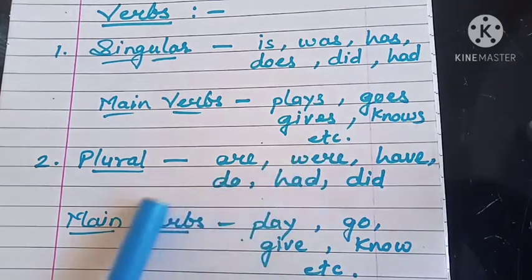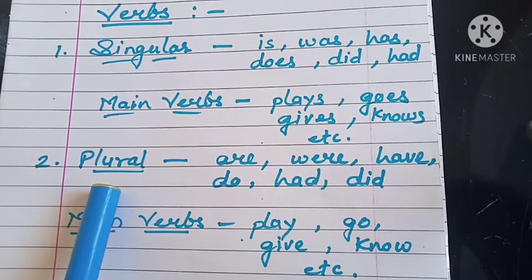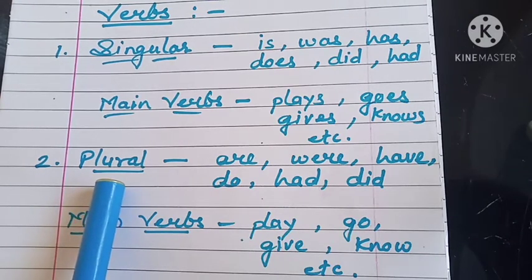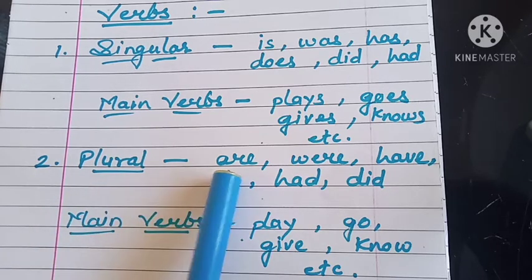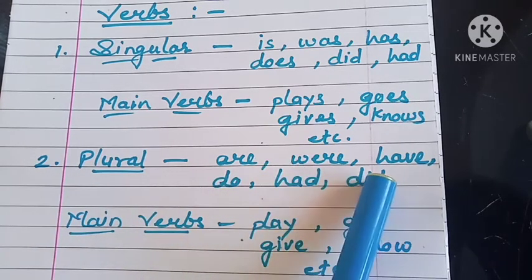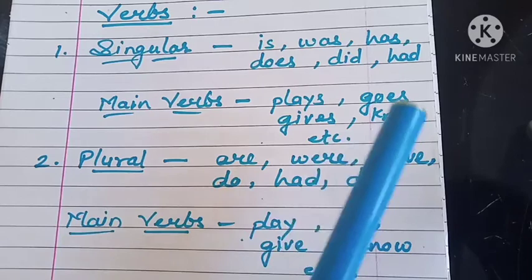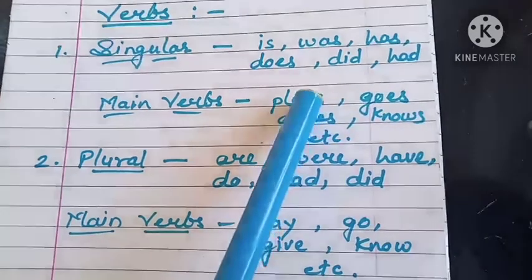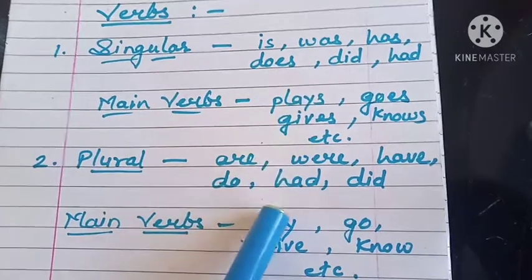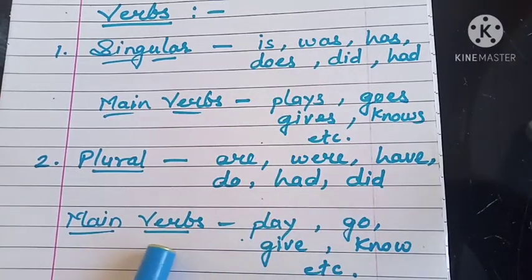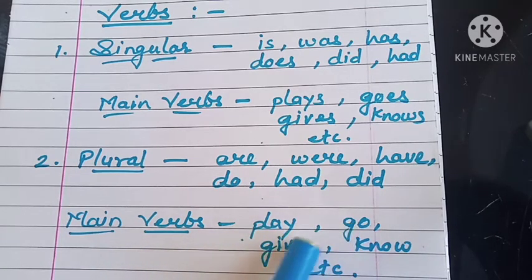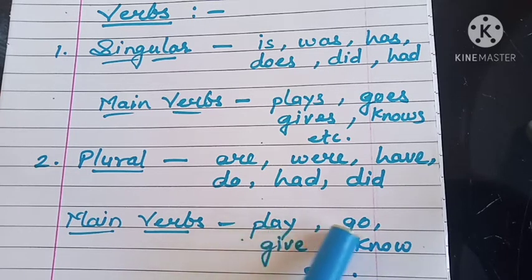Now let's see the plural verbs. Plural verbs are those used with plural subjects. For example: are, were, have, do, had, did. As I told you, 'did' and 'had' are used both with singular and plural subjects. The main verbs used with plural subjects are: play, go, give, know, etc. You must have noticed that we have not used S or ES with these verbs — they are the plain form, or first form, of verbs.